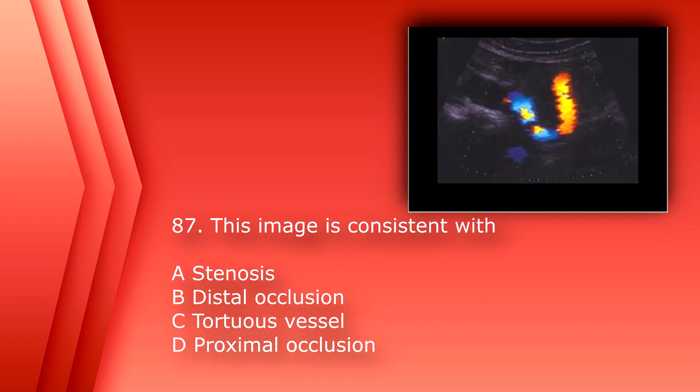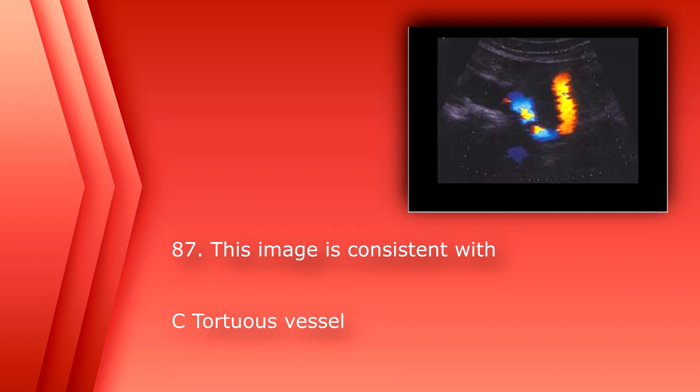Number 87: this image is consistent with A. Stenosis. B. Distal occlusion. C. Tortuous vessel. Or D. Proximal occlusion. The answer is C. Tortuous vessel.